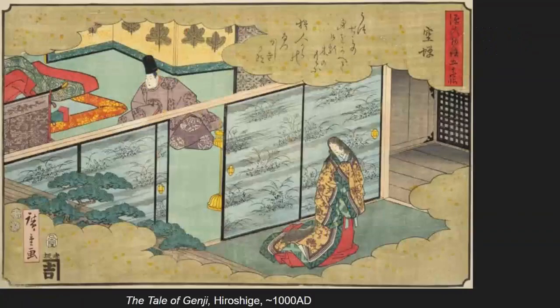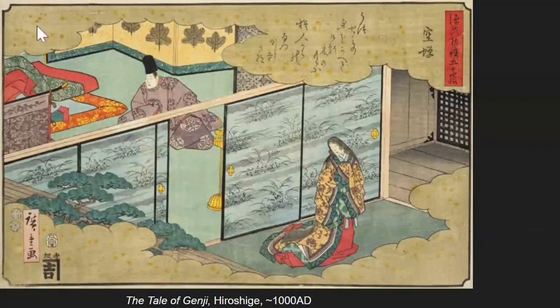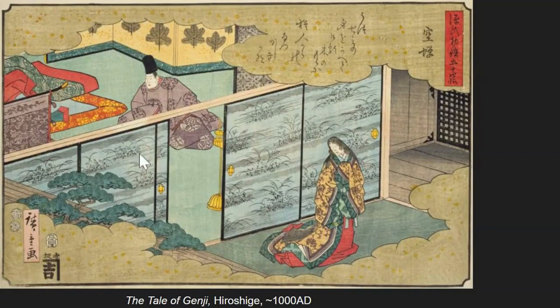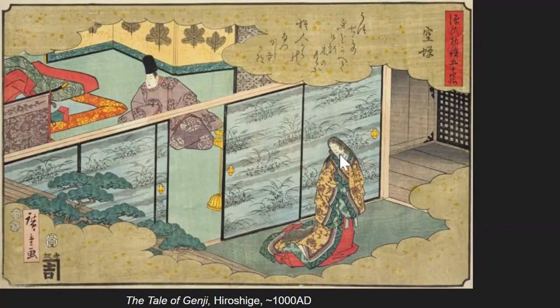Now we're going to move across the globe to Japan in around the year 1000 AD — about 1,500 years after that first painting — and we have what we consider the first written novel. We see some Japanese script that illustrates this scene happening in the story. This is The Tale of Genji, the first written novel, and even that had a lot of pictures. It used pictures to tell a lot of the story, and the words added to it. Pictures have been a crucial part of telling human stories for a long time.